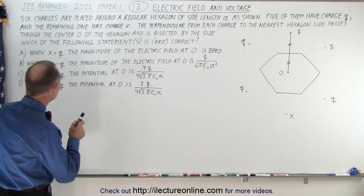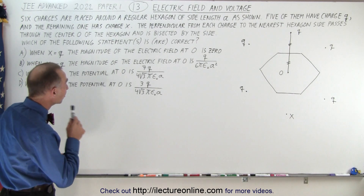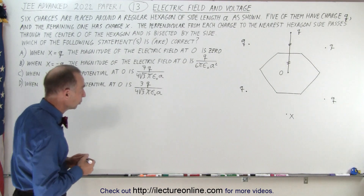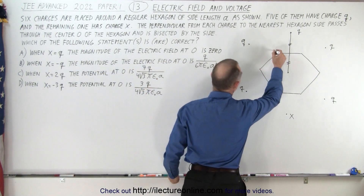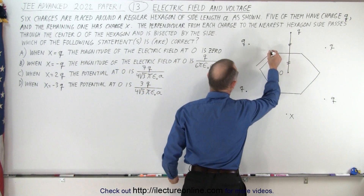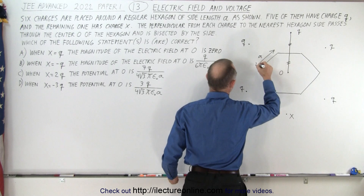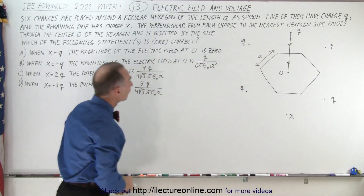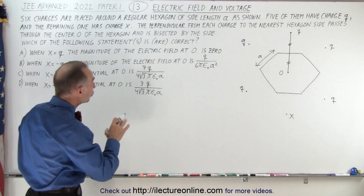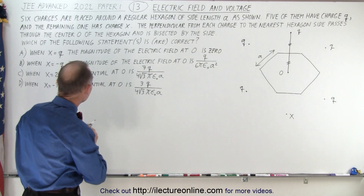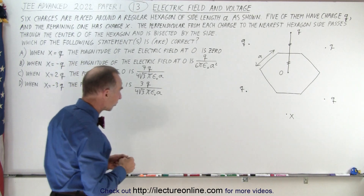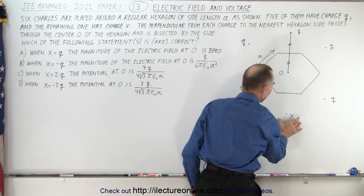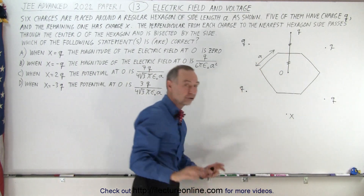We have six charges that are placed around a regular hexagon of side length A, as shown. One of the sides has length A, and since it's a hexagon, all sides have length A. Five of them have charge Q, and the remaining one has charge X — that's the unknown charge. So charges one through five have charge Q, and the last one has charge X.